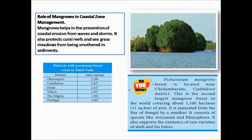The following table shows the names of districts with prominent forest cover in Tamil Nadu. The district with the maximum forest cover is Dharmapuri with 3,280 sq. km, followed by Coimbatore, Erode, Vellore, Nilgiris, and Dindigul.